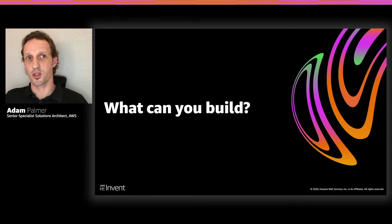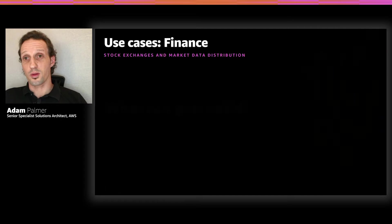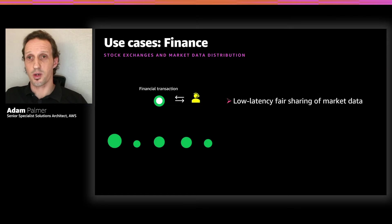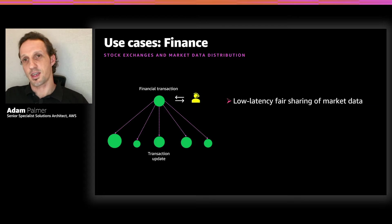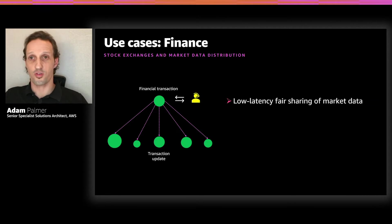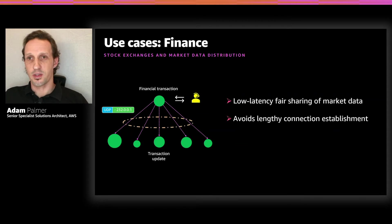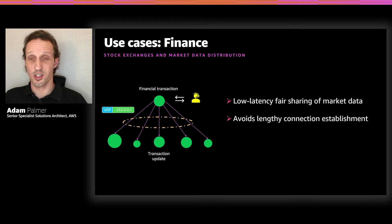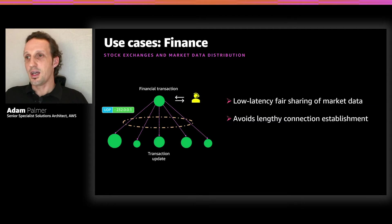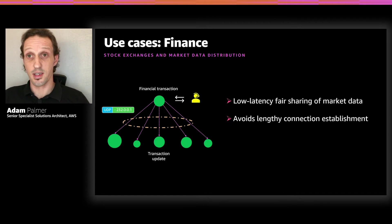So what can you build? The finance sector has long used multicast technologies. An example might be a stock exchange where a central transaction takes place. Once this transaction has occurred, there are often many downstream security and financial parties that need to be updated. Using UDP and multicast, that central exchange is able to disseminate information very quickly without setting up connections or negotiations associated with TCP. Using multicast, the exchange only needs to send this information once, rather than as many times as there are unique destinations.